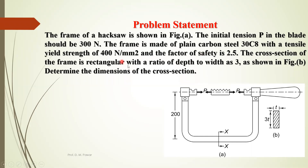The cross section of the frame is rectangular with the ratio of depth to width equal to 3. In the diagram, this is the width and this is the thickness. So if the thickness is t, then the width should be 3 times t. We have to determine the dimensions of the cross section at the XX point of the hacksaw frame.